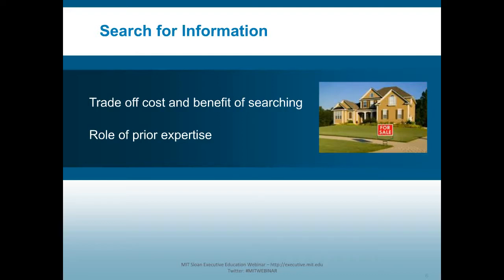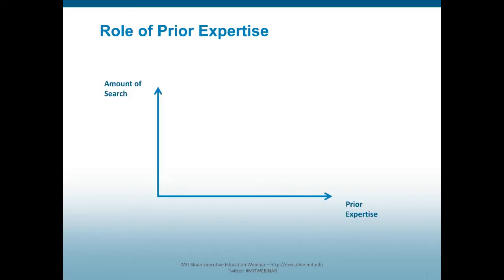So the first point is the amount of search customers do when purchasing a product is a function of the cost and benefit of searching. The second point is the amount of search we do is a function of our prior expertise. On the x-axis we've got the amount of prior expertise that the customer has, and on the other axis we have the amount of search that customers engage in. I want you to think for a moment about what that relationship looks like — when I show it to you, you're going to be surprised, as I was when I discovered this. This has been heavily studied over the last five to ten years. We understand this relationship very well.